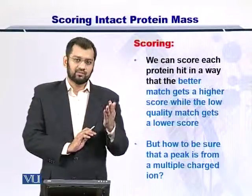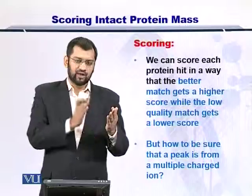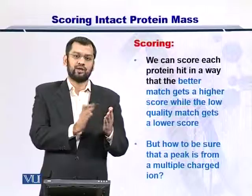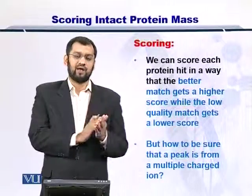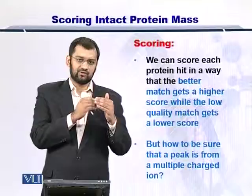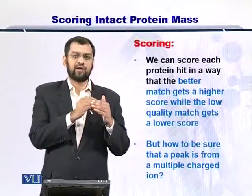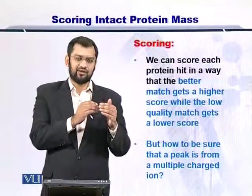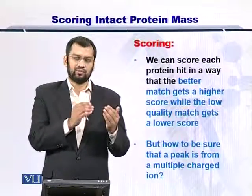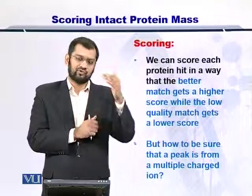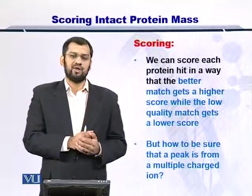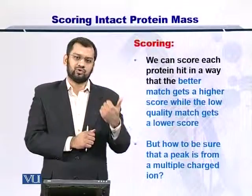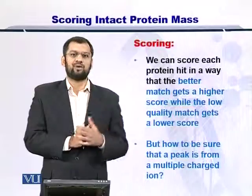Once you have this molecular weight from MS1 and all the molecular weights from the database, you can compare each one of them together. The two molecular weights that are closest are ranked number one. If the match is a little lesser, then you rank them number two, and so on. You will end up with a list of ranked proteins, with the top-ranking protein being the closest in mass to the mass reported from the mass spectrometer.